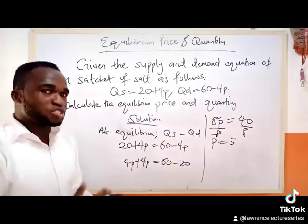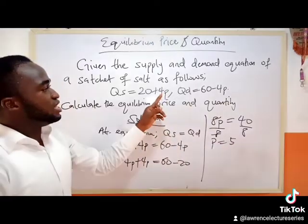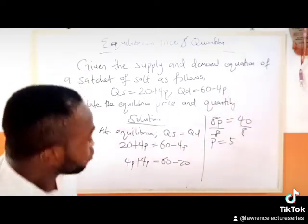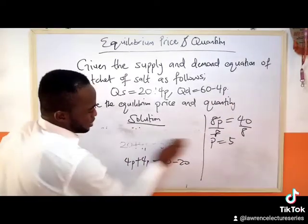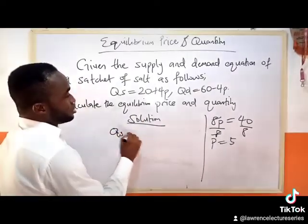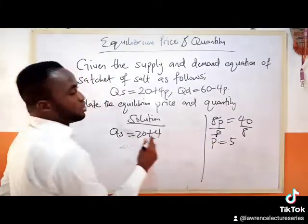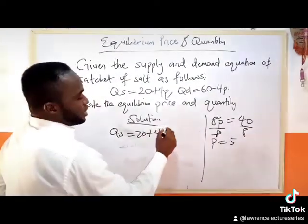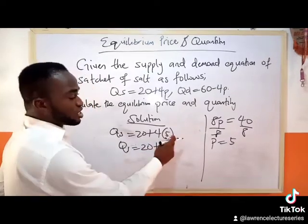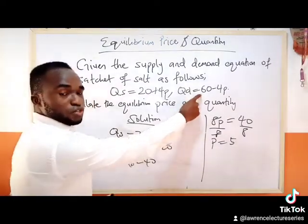Now we're going to find the equilibrium quantity. When looking for the equilibrium quantity, all we need to do is substitute p equals 5 into the equation for Qs. So we bring down this equation: Qs equals 20 plus 4 times 5, which gives us 20 plus 20. Qs equals 40.